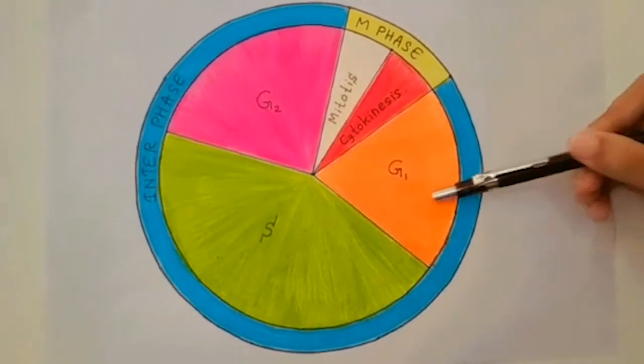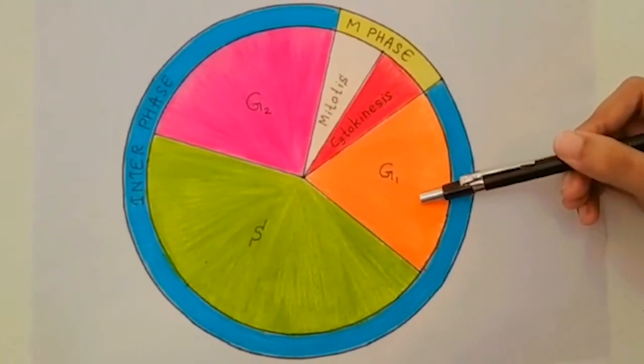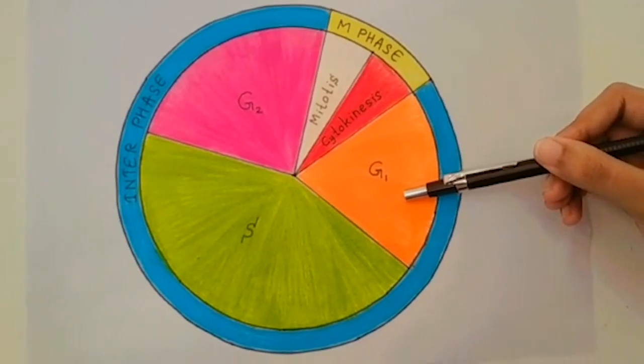Cells enter into the cell cycle through G1 phase. In the G1 phase, cells make more organelles and synthesize proteins and enzymes.